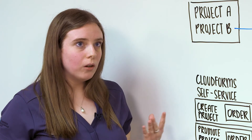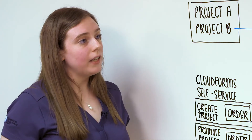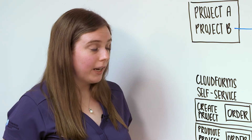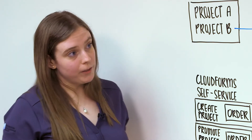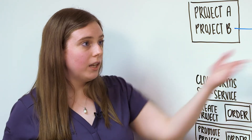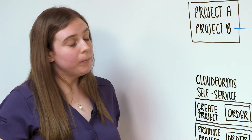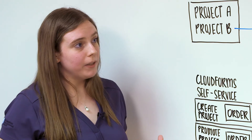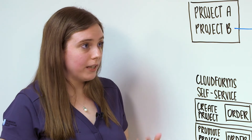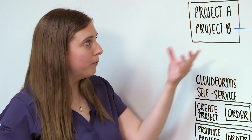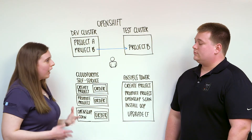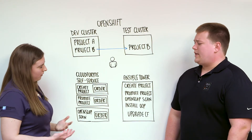Now let's say I'm an OpenShift developer and I have two OpenShift clusters — a dev cluster and a test cluster — and I want to be able to copy everything in my project and its artifacts from dev to test. How would I do that?